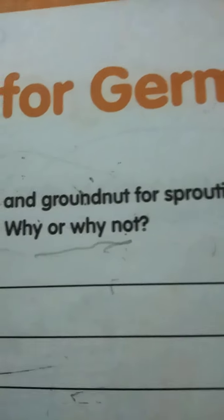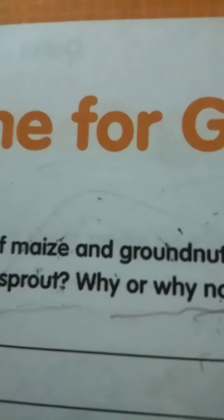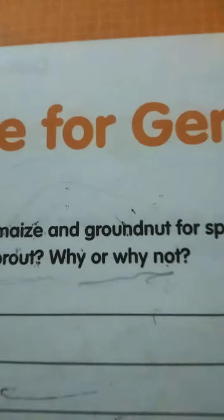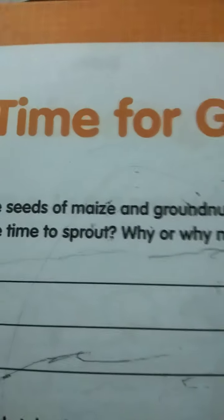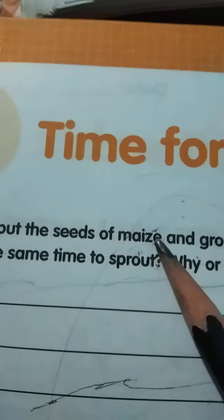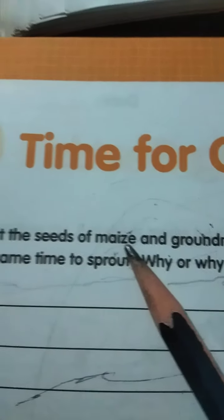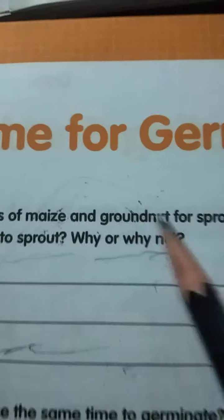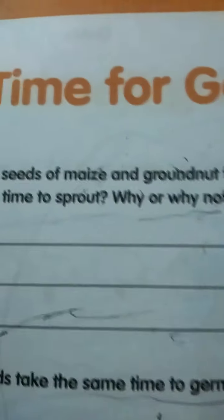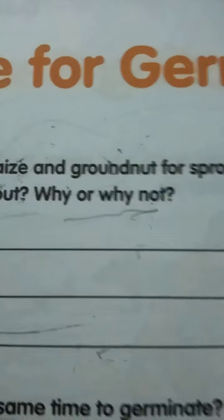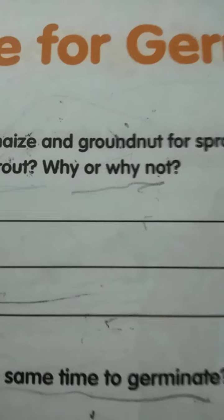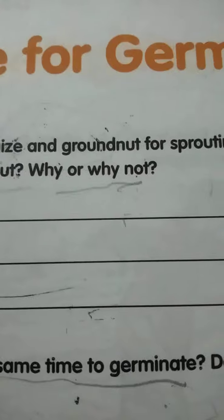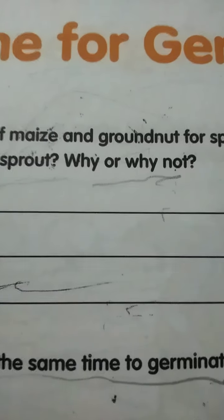For the answer, consider that groundnut and maize are different types — one is monocot and one is dicot. When conditions are the same, the time taken by different seeds to sprout or germinate is different, so they will not germinate at the same time.